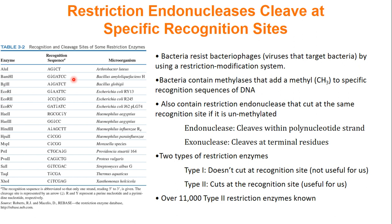These restriction endonucleases will cut at the same site that is being methylated. For example, a bacteria may have a methylase to add a CH3 to a guanine in the sequence GGATCC, and also contain an enzyme that cuts the sequence GGATCC. The restriction endonuclease won't cut DNA that is methylated, preventing cutting of their own DNA, but it will cut unmethylated foreign DNA with the sequence GGATCC, destroying it.